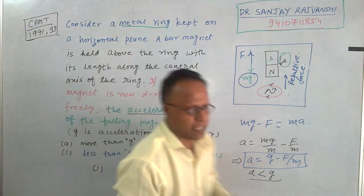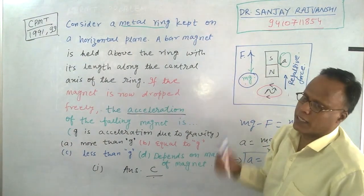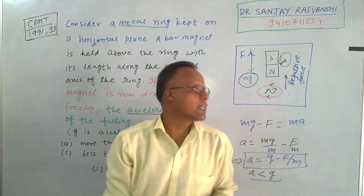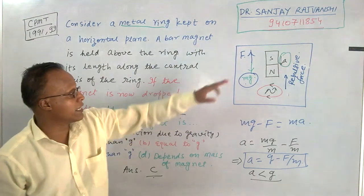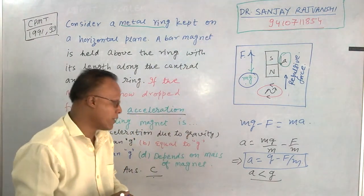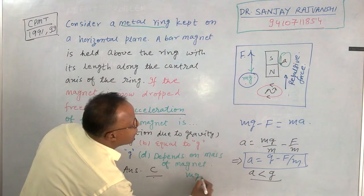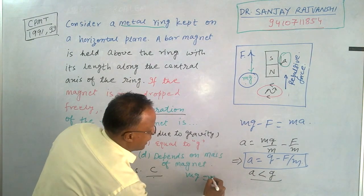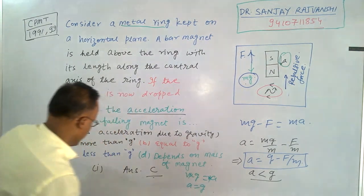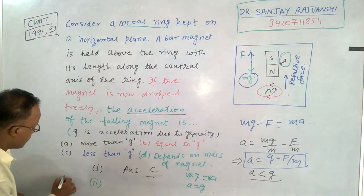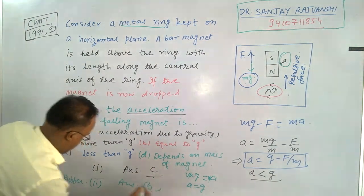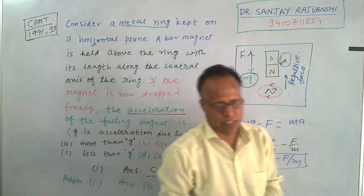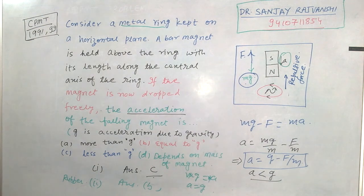Now, if instead of a metallic ring you had a rubber ring, since rubber is not conducting, no induced current would be generated. With no induced current, there would be no upward force, so mg alone acts and MA equals mg, giving A equal to G. For a rubber ring, the answer would be B. So only when the ring is conducting is an induced current generated, creating the upward force.